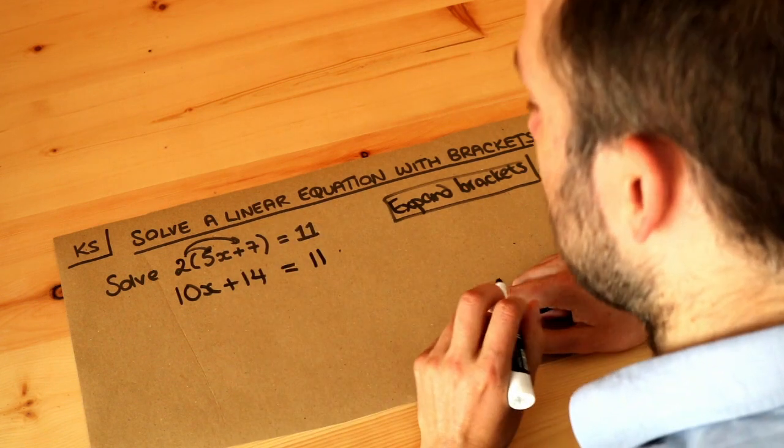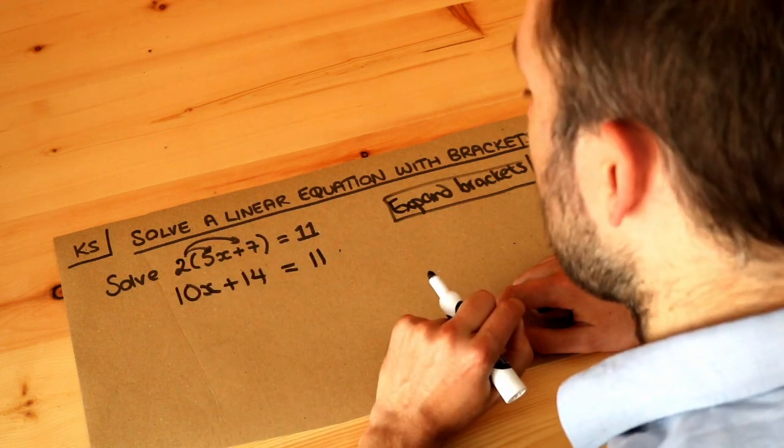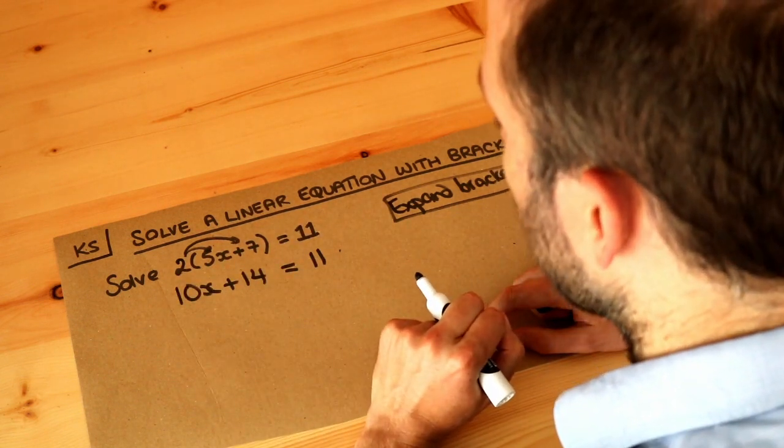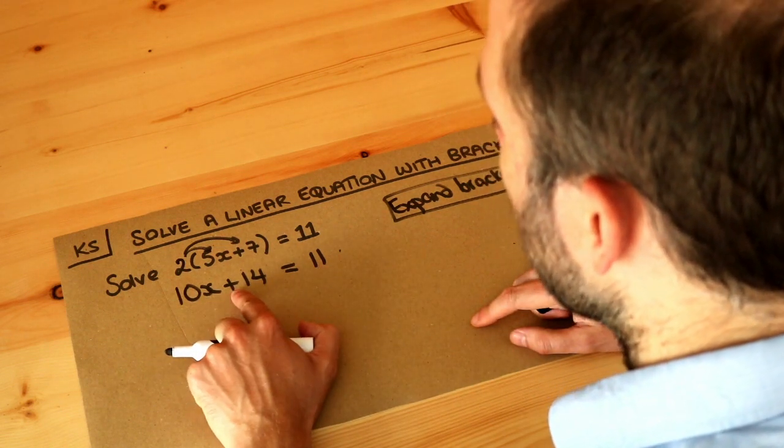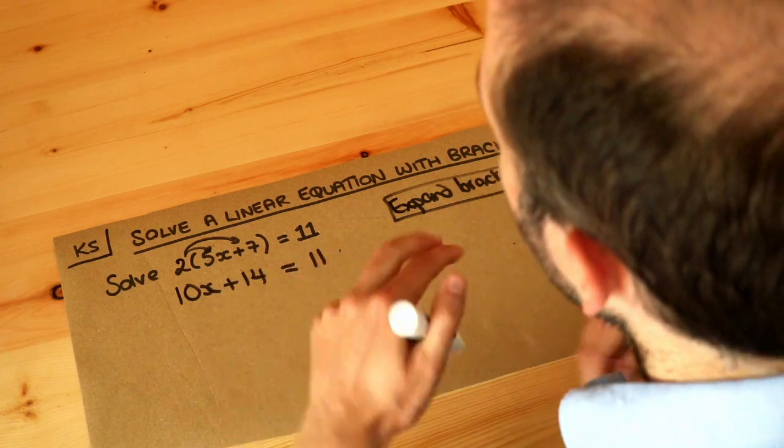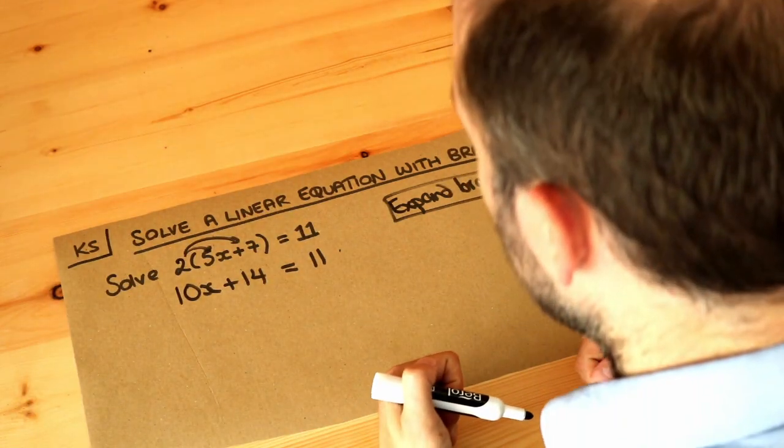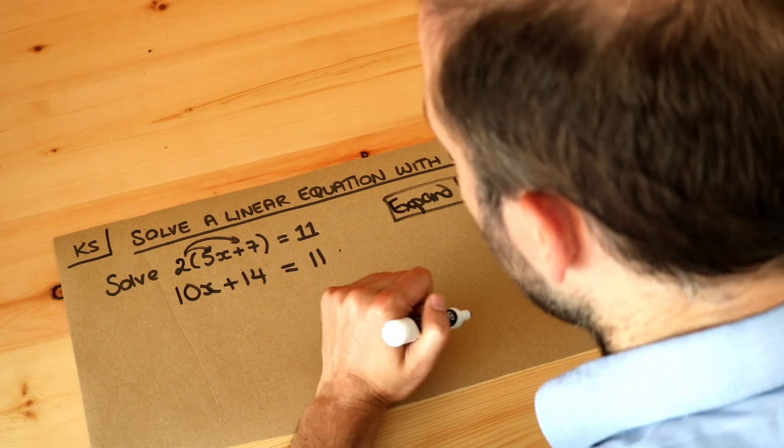Now we've got a simpler equation without any brackets, and we solve in the usual way. We think about what's happening to x. x has been multiplied by 10 and then we're adding 14, so we undo those things. We undo the last thing that we did to x first.